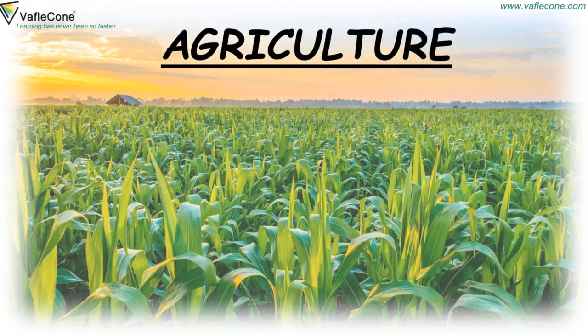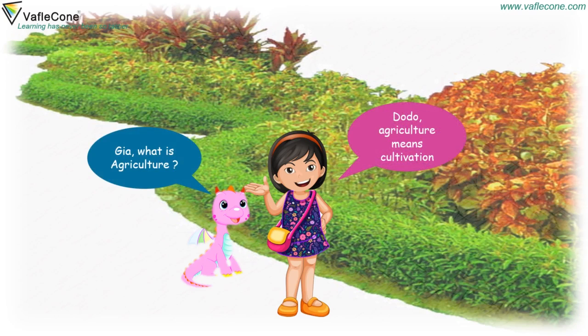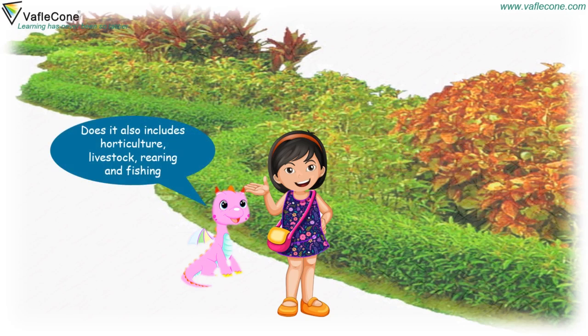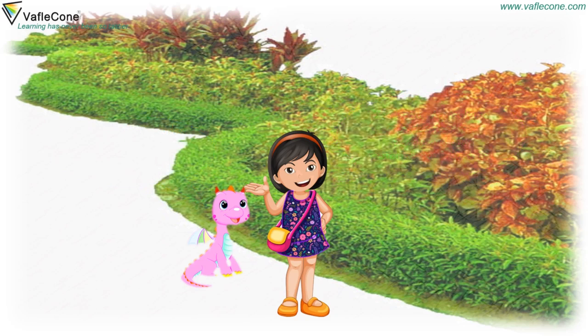Agriculture. Jiya, what is agriculture? Dodo, agriculture means cultivation. Does it also include horticulture, livestock rearing and fishing? Yes, Dodo. And agriculture provides food for people and raw materials for industries.